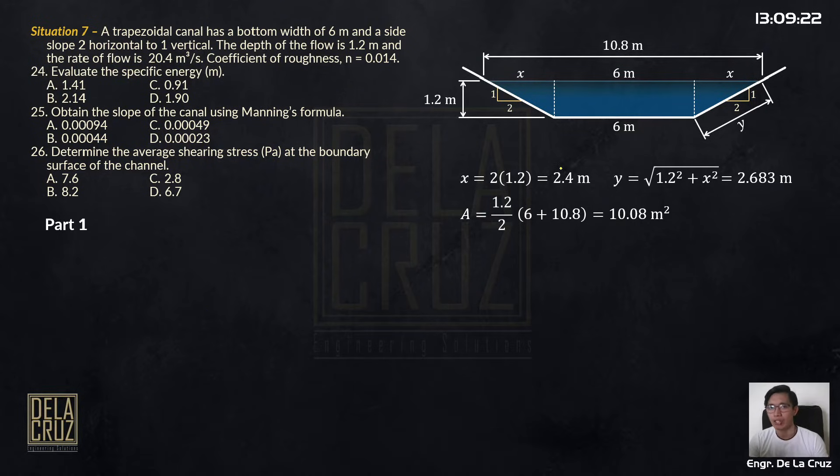So we need the velocity of flow. Now what we have here is the flow rate or Q. So we can get the velocity of flow using this formula. The velocity is discharge over area. From here, the discharge is 20.4.